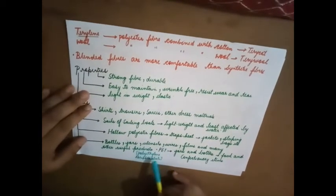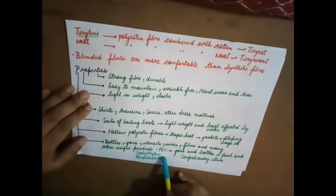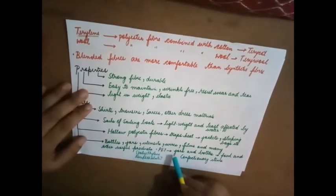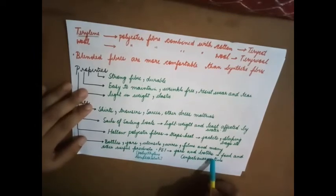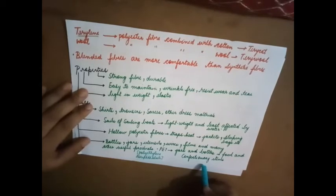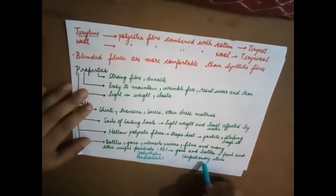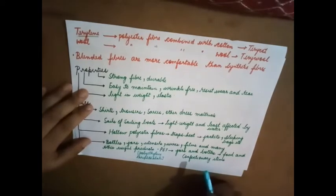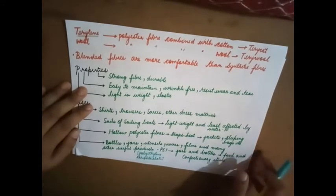PET or it is also known as polyethylene terephthalate. It is a type of polyester. Now it is used in making jars and bottles as well as food and confectionery items. Confectionery is nothing but it is related to sweets as well as chocolate. It is used to make the chocolate covers and the sweet covers.